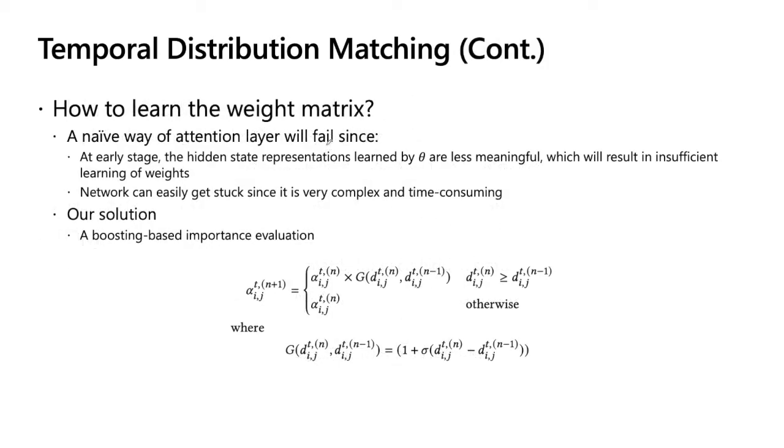So, how to learn the weight matrix alpha? A naive way of attention layer will fail since at the early stage, the hidden state representations learned by theta are less powerful, which will result in insufficient learning of weights. And secondly, the network can easily get stuck since it is very complex and time-consuming. Our solution is a boosting-based importance evaluation method. It is based on boosting, but the difficult step is we learn to value its importance in each step. If at iteration n, its distance is greater than the distance from the last step, then we will just increase its value by times g function. Note that the g function here is greater than 1, so we can make sure that alpha will increase in this situation. Otherwise, we will keep it unchanged. Using this very simple boosting-based importance evaluation method, our work can finally learn to evaluate the importance of each hidden state.